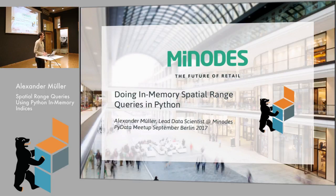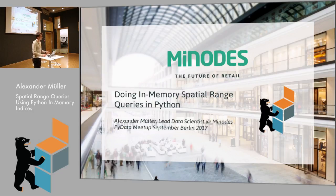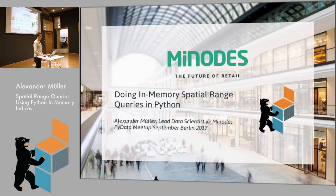First of all, I want everybody to understand what a spatial range query is. Second, I want to know what kind of alternatives you have when you are facing this issue - it's not the only way to solve it, there are probably billions of libraries and options for solving this problem. And of course, I want you to understand that you can actually produce this in just six lines of Python code.